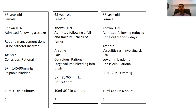A third case: a 68-year-old female, known hypertensive, admitted with reduced urine output for two days. She is afebrile with a vasculitic rash involving bilateral lower limbs. On examination she is pale with lower limb oedema, conscious and rational, with an elevated blood pressure of 170/100. Urine output is again low at around 10 ml over the last six hours.